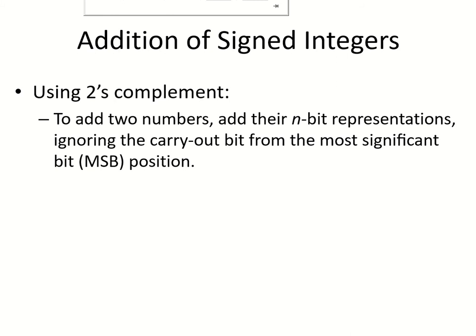In this lesson, we are going to look at the addition of signed numbers using 2's complement. If I have to add two integers which are signed and in their 2's complement representation, we are going to add their n bits and we will ignore the carry-out bit from the most significant bit position. So this is the addition rule.